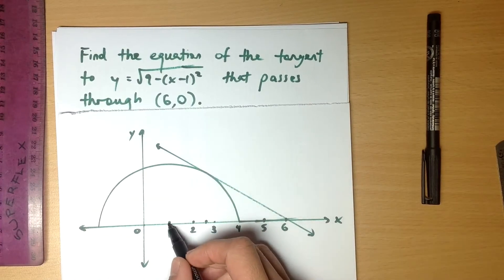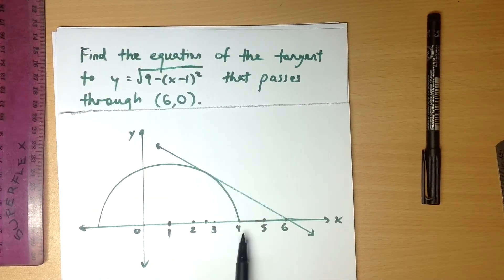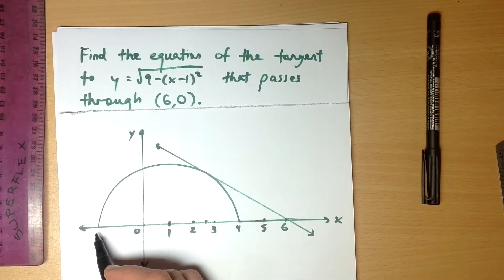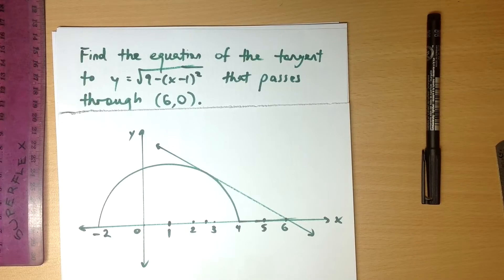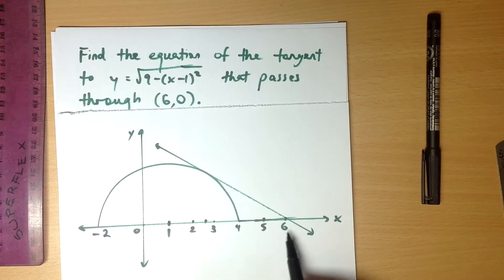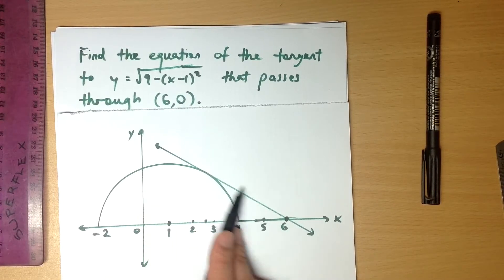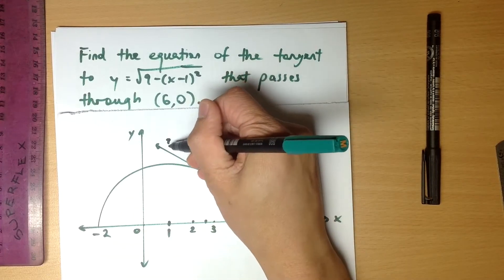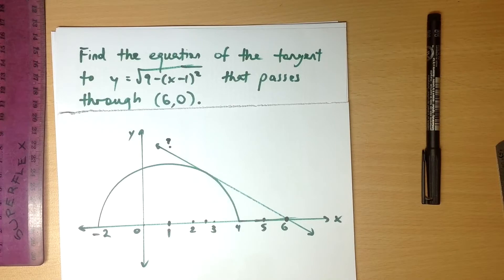So here's the shape we're talking about — there's the semicircle. Its center is at (1, 0), and because it has a radius of 3, it extends from x = 4 across to x = −2. There's the point (6, 0), and this is the tangent in question. I'm trying to work out the equation of this line.